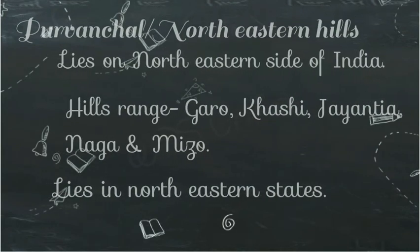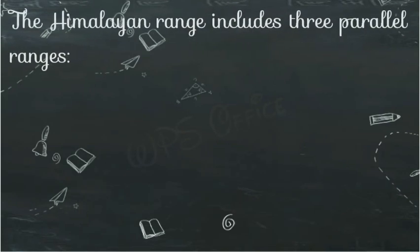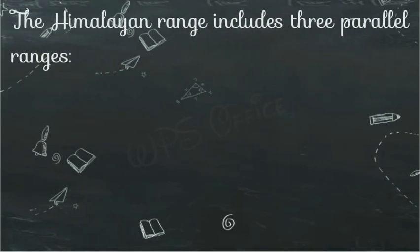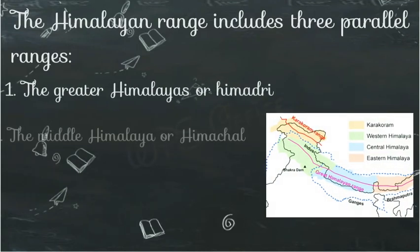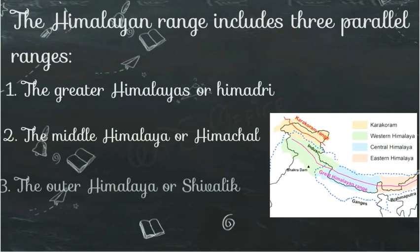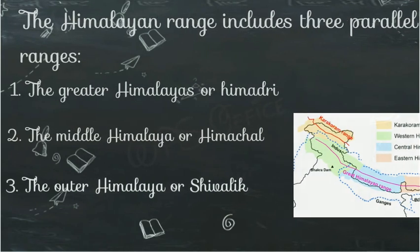ये भारत के उत्तरी पूर्वी राज्यों में फैला हुआ है जिसे 7 sisters के नाम से भी जाना जाता है। And now we concentrate on the main Himalayan range. The Himalayan range is divided into three alternate ranges — हमारा Himalaya तीन range में बँटा हुआ है: पहला Greater Himalaya या Himadri, दूसरा Middle Himalaya या Himachal, और तीसरा Outer Himalaya या Shivalik।